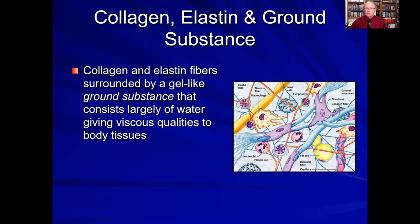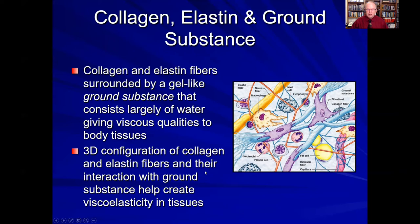We have the collagen and elastin acting as high modulus and low modulus components within our tissues that withstand tension, but we also have a fluid component that allows viscosity — that fluid component is known as the ground substance. The ground substance is this jelly-like fluid through which the collagen fibers run, along with elastic fibers and all other cellular components of our tissues including neutrophils, plasma cells, fat cells, and lymphocytes. This ground substance almost acts as a lubricant between the collagen and elastic fibers so that their three-dimensional orientation helps create the mechanical property we call viscoelasticity.